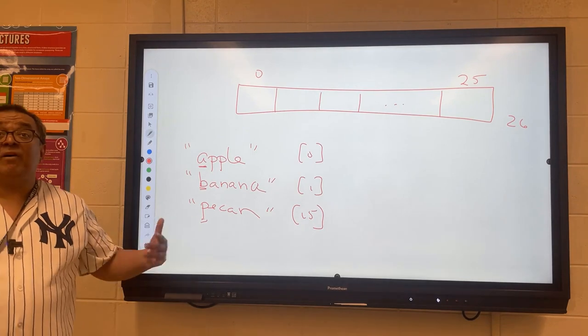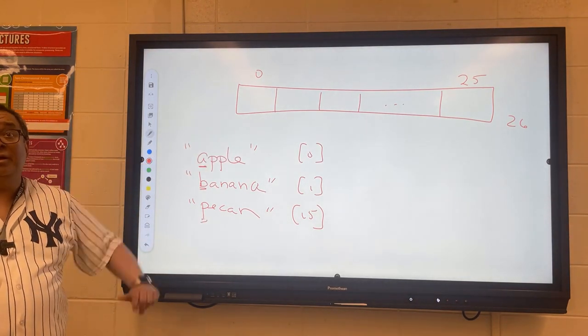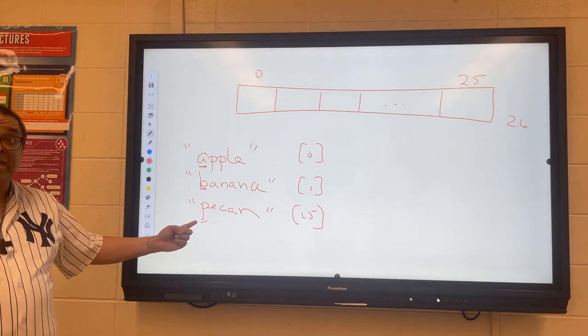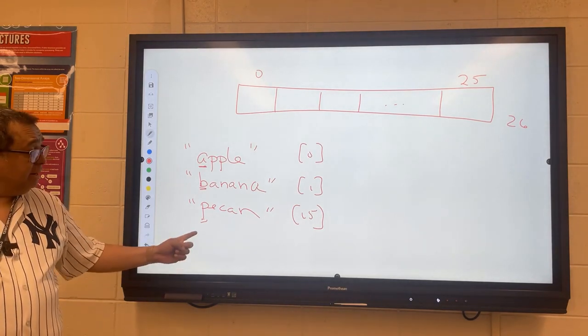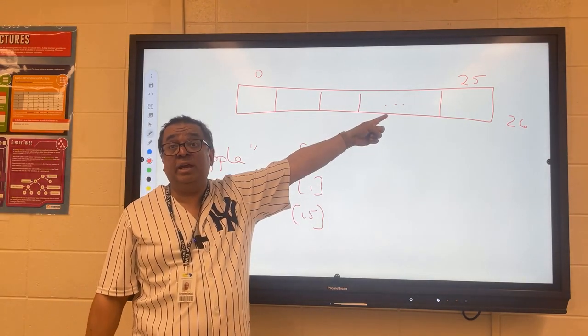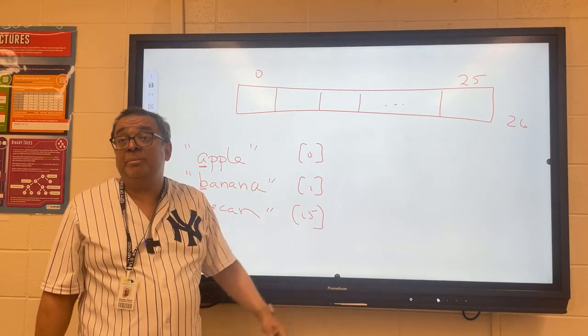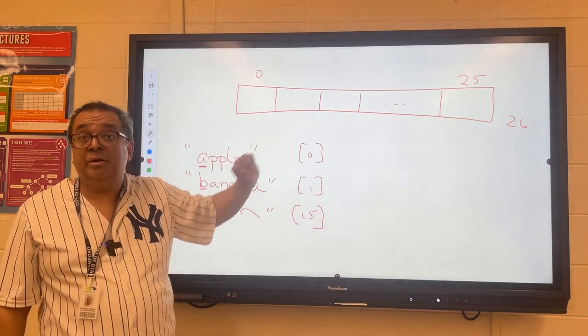Then the next time we need to find out if pecan is stored in our array or not, we calculate the hash function again, take the P, convert it to the number 15, look at location 15, and if it's there we know it's there, and if it's empty we know that pecan is not in our array.